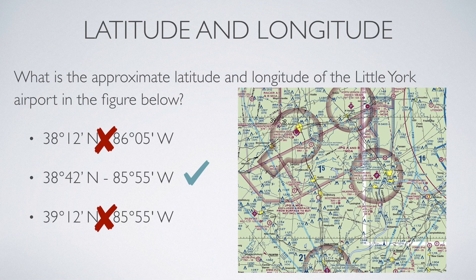So let's go back to our answer. What we figured out was that the Little York Airport is at 38 degrees and 42 minutes north latitude and 85 degrees, 55 minutes west longitude.